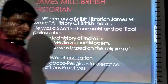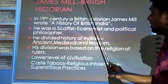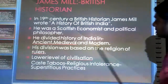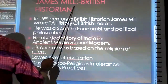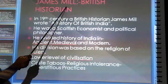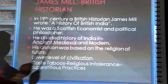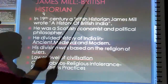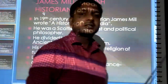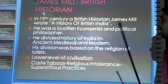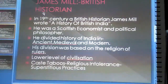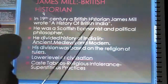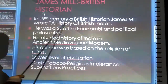The next topic is James Mill, a very great personality and a person of renowned fame. James Mill — you can find his introduction in the slide as a British historian. British means a person who belongs to England. In the 19th century, this British historian James Mill wrote a book, 'A History of British India.' He was also a Scottish economist and political philosopher.